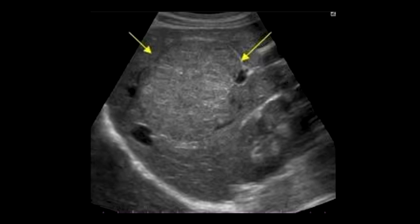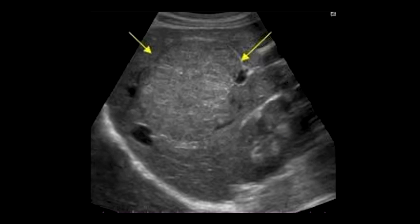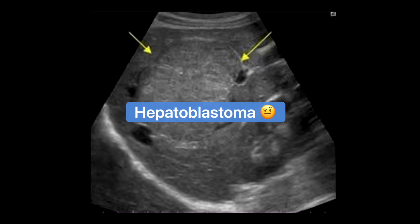Now when we see a lesion in the liver of an adult, the first thing that comes to mind is hepatocellular carcinoma, because that's the most common malignant tumor of the liver in adults. And when doing pediatrics, we tend to think of hepatoblastoma, because that is the most common malignant tumor in pediatrics.